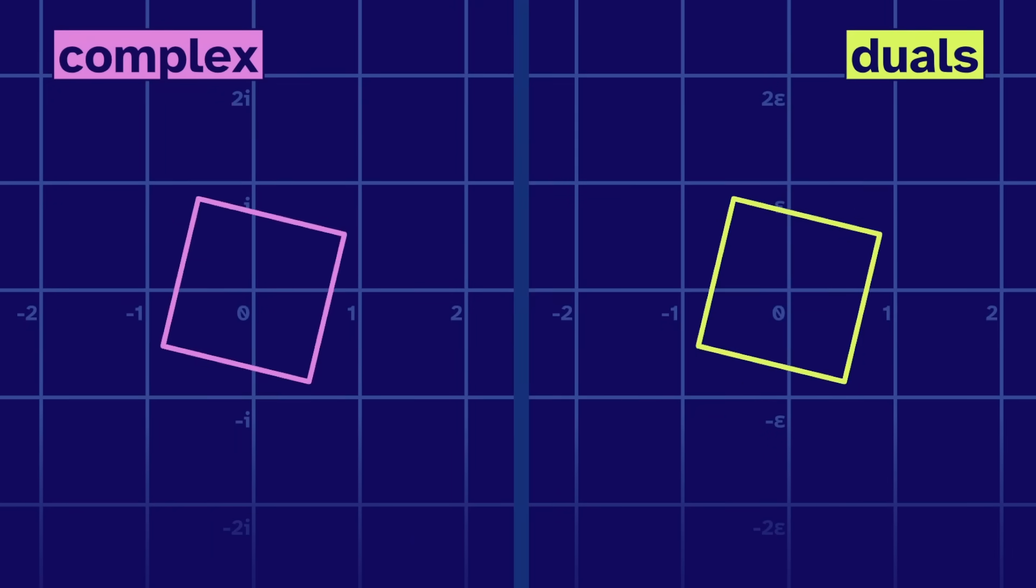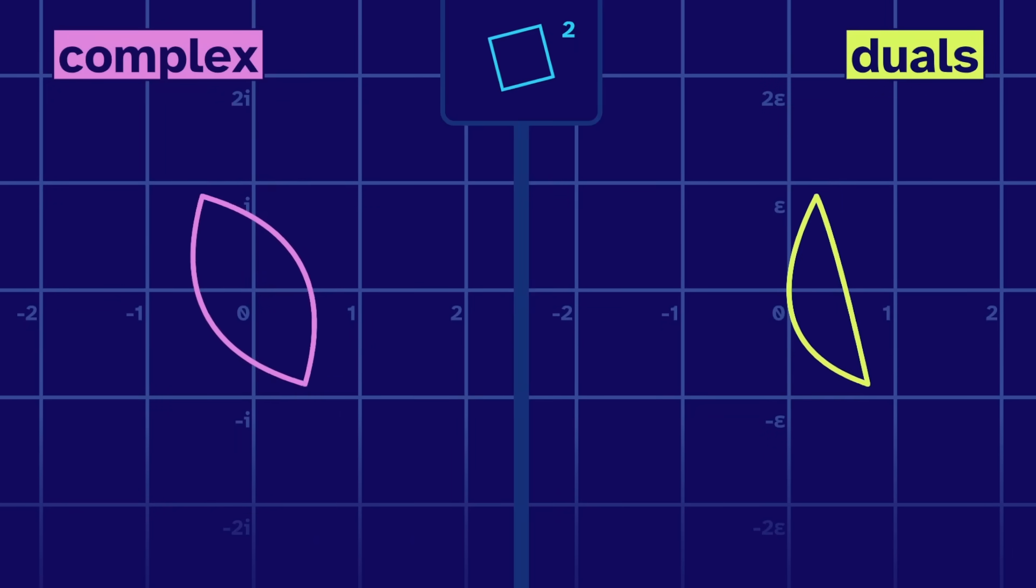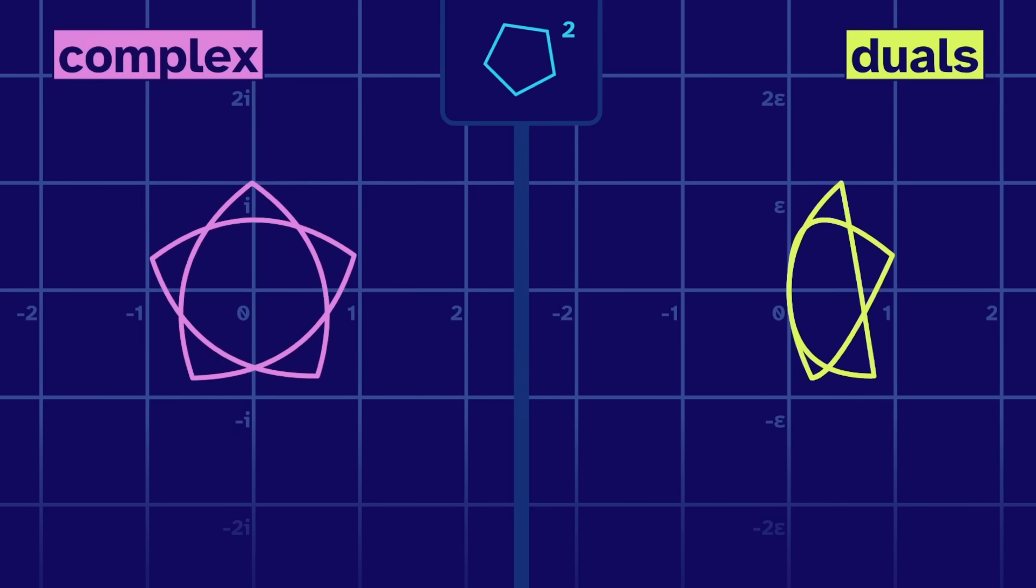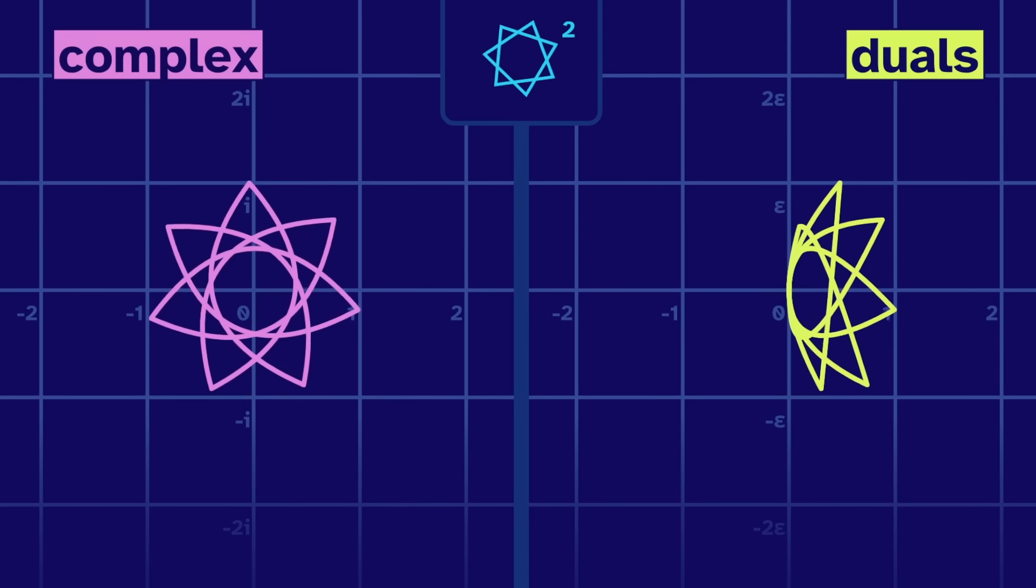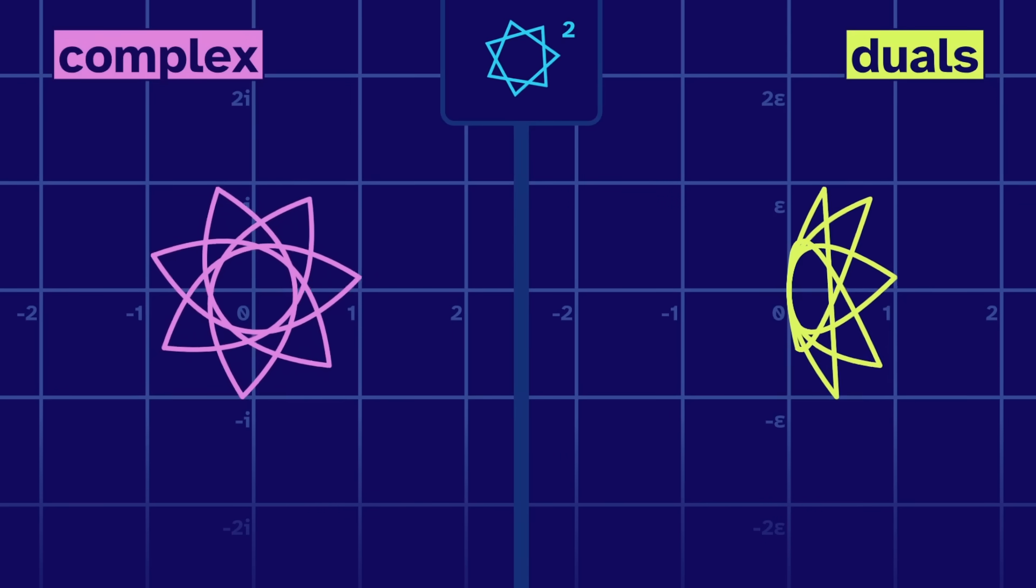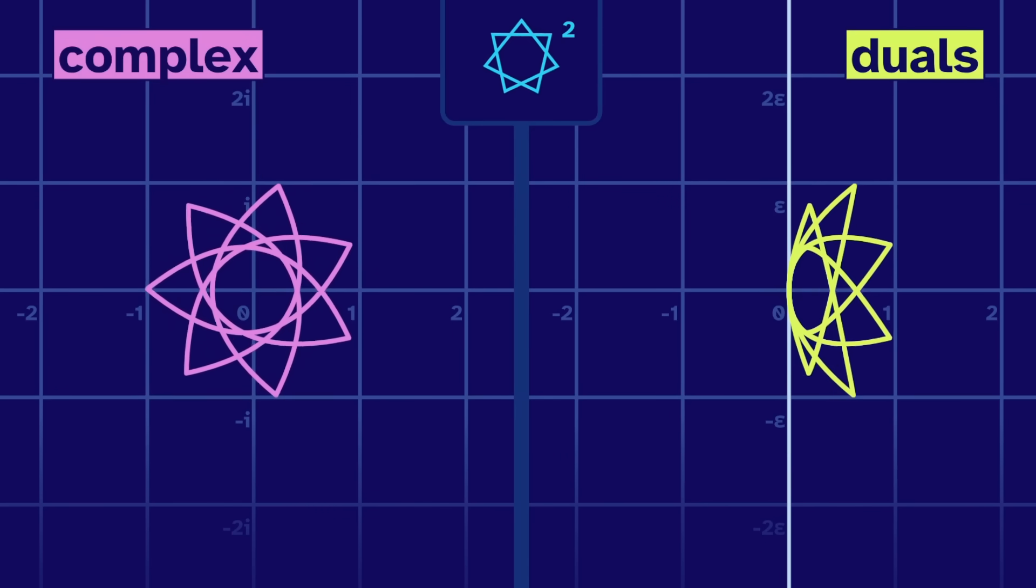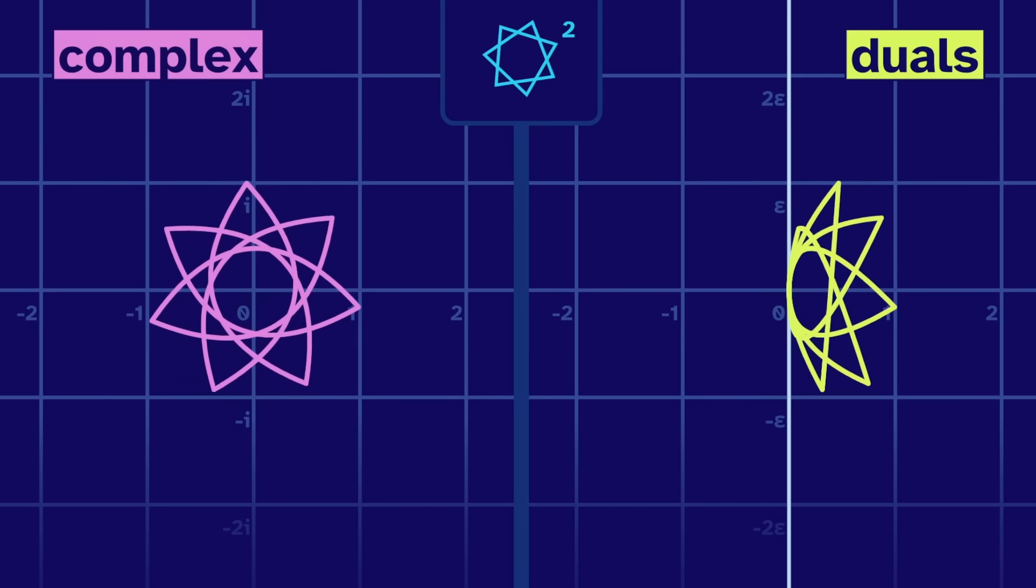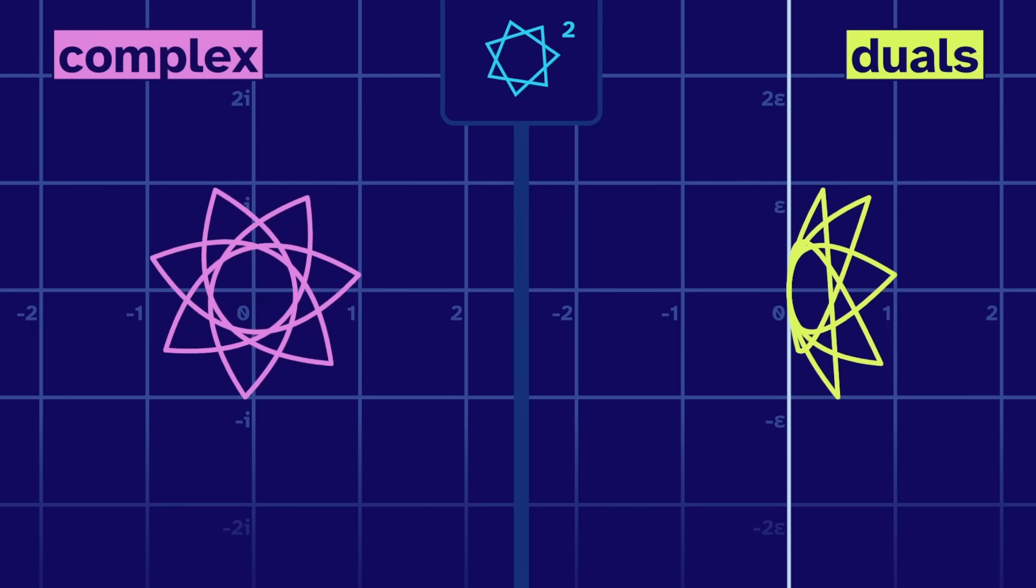So let's make squares, then square them. The dual squared square is a squashed version of the complex squared square. We see the same thing with other squared shapes. The dual versions are squashed. Let's highlight the prime meridian. Now we notice that the squash is entirely in the eastern hemisphere.